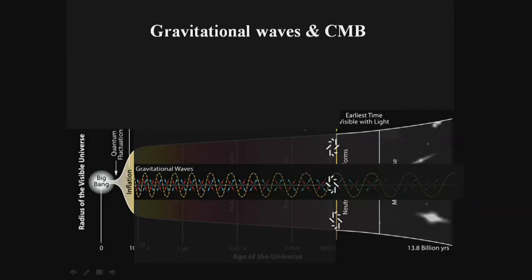We don't directly try to detect gravitational waves like the LIGO guys do. Instead, we look for electromagnetic radiation from the surface of last scattering — the cosmic microwave background. We look for an imprint of gravitational waves on CMB polarization. Specifically, we look for microwave linear polarization and construct a pattern. That pattern could be an imprint of primordial gravitational waves: it is a curl pattern on the sky.